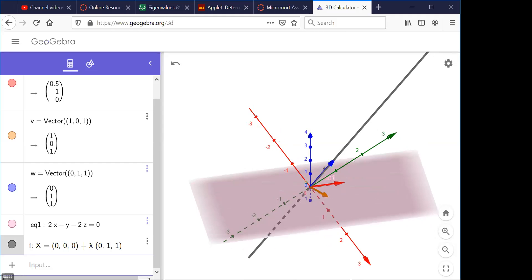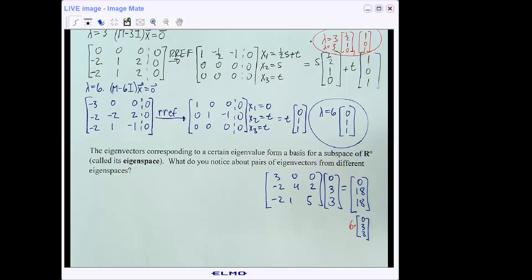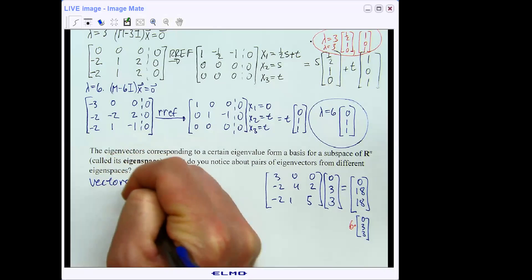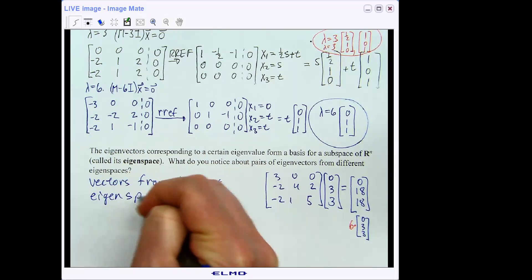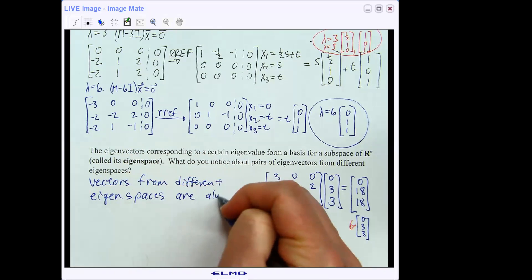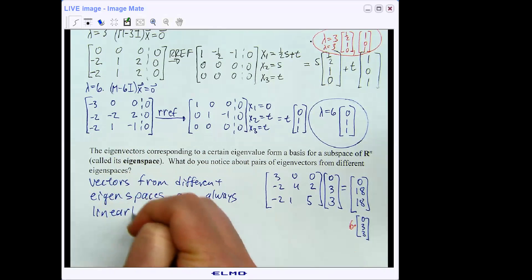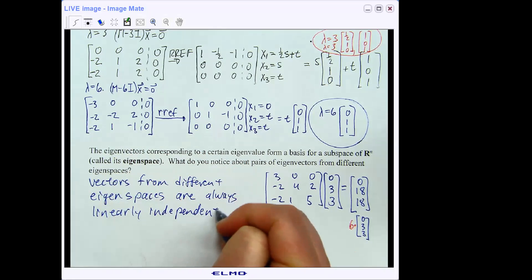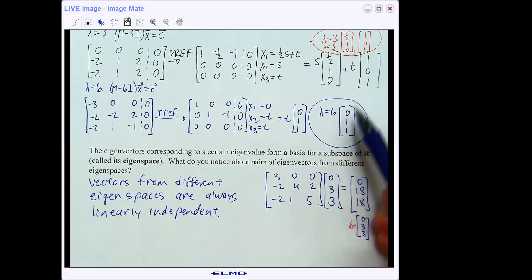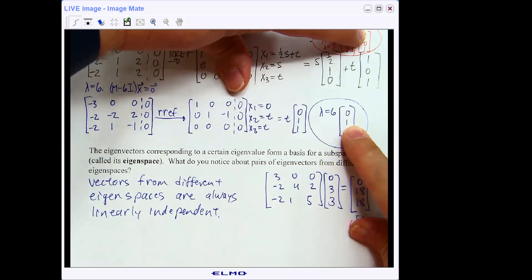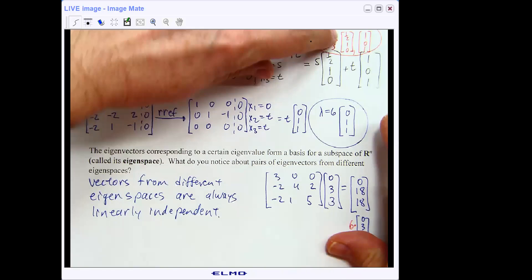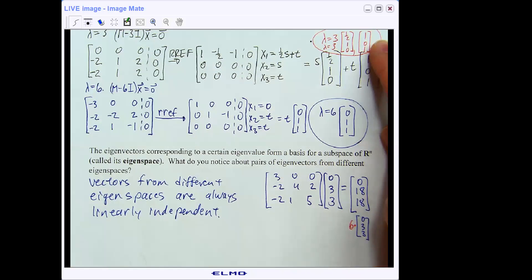So let's go back to our paper and note that vectors from different eigenspaces are always linearly independent. So these red vectors are linearly independent on the blue vector. So if I were to take any pair here, this pair would be linearly independent. That pair would be linearly independent because this came from the eigenspace corresponding to lambda equals 6, and each of these came from the eigenspace corresponding to the eigenvalue of lambda equals 3. We'll talk more about these cool eigenvalues, eigenvectors and stuff in our next section. So I'll see you in the next video.